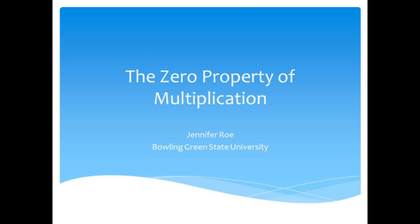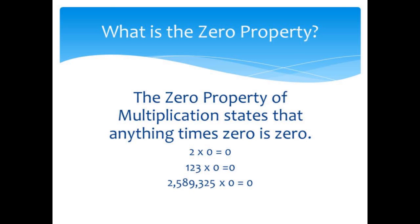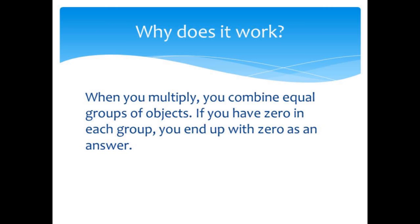The Zero Property of Multiplication states that anything times zero is zero. For example, 2 times zero is zero, 123 times zero is zero, and 2,589,325 times zero is still zero.